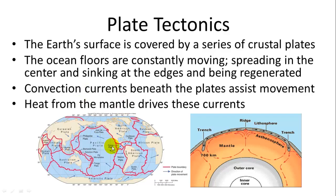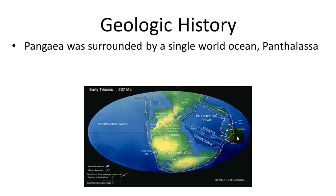The plates are constantly moving in different directions. Where they meet, some sink underneath others. These movements are fueled by convection currents in the mantle — when currents move in opposite directions, they cause crusts to collide or form new crust at ridges where plates are separating. Heat from the mantle drives these convection currents, which move the crust in different areas.